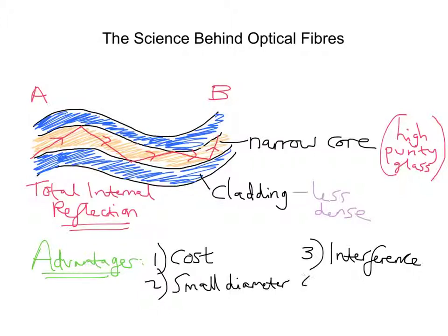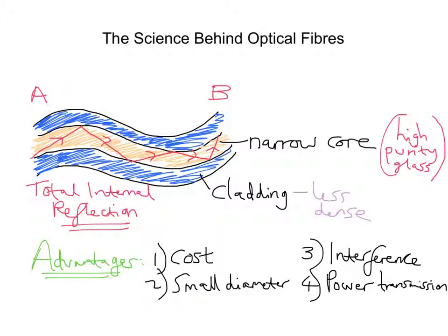The final advantage is that of power transmission. Optical fibres require less power for transmission — the signal in an optical fibre is subject to much less degradation than in a copper wire. In terms of signal boosting, we only need to boost it after a really long distance, around 100 kilometres. Because the signal degrades more easily in copper, boosting is needed much more often there — typically every eight kilometres instead.